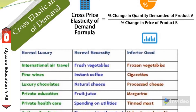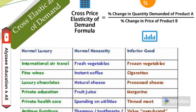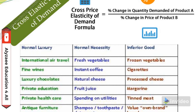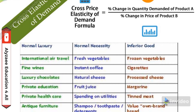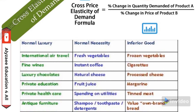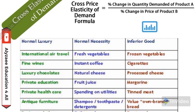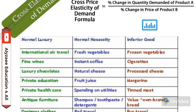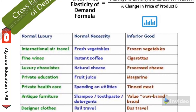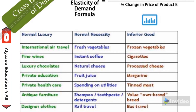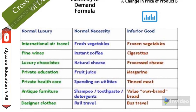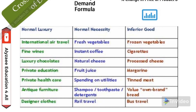Normal luxury goods include international air travel, luxury chocolates, private education, foreign education, and self-financed programs — these are expensive things. Normal necessity goods include fresh vegetables, instant coffee, natural cheese, fruit juices, and normal grocery items. Inferior goods include frozen vegetables, cigarettes, processed cheese, and margarine — these fall under the inferior goods category.